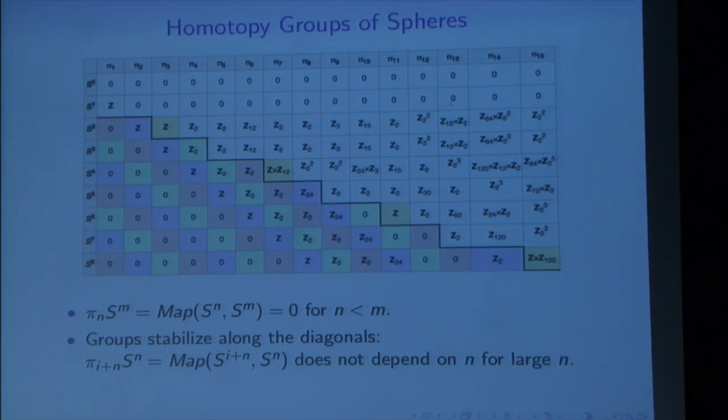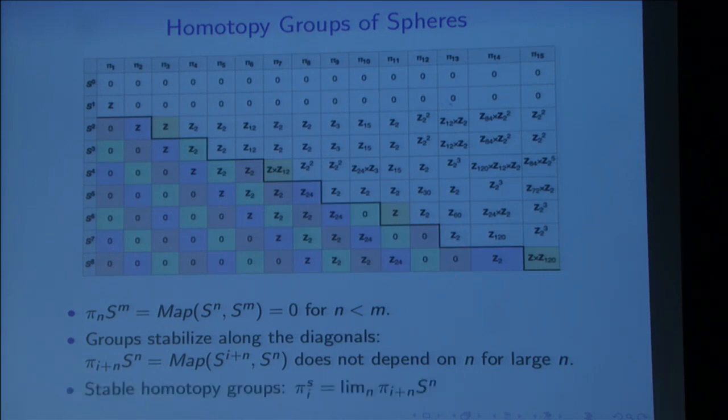Homotopy groups of spheres stabilize along these diagonals. Maps from S^(i+n) into S^n don't really depend on n—they only depend on i once n is large enough. Once you're far enough in that diagonal, instead of asking can we compute homotopy groups of spheres, maybe we can ask can we compute stable homotopy groups of spheres. We just need to compute one per each diagonal. Maybe that's easier.